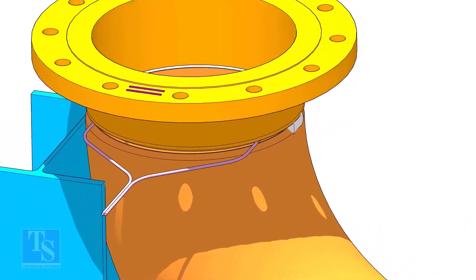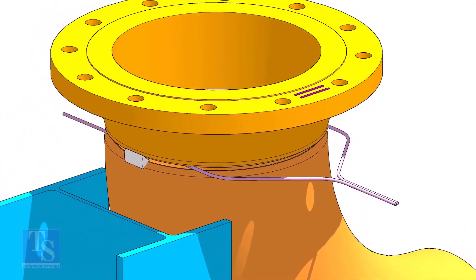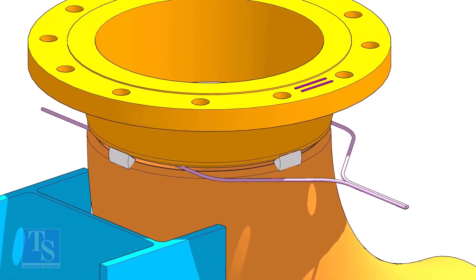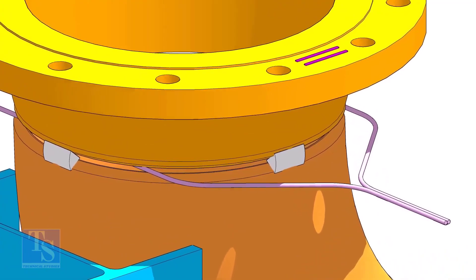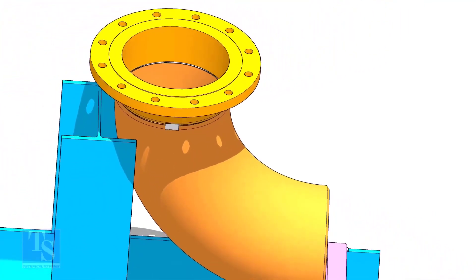Tack weld the flange to the pipe in 180 degree directions. After the tack weld, remove the gap rod.